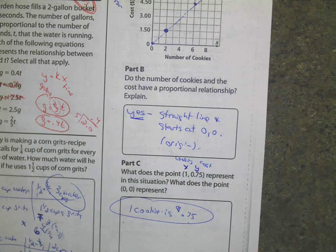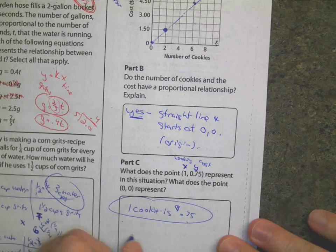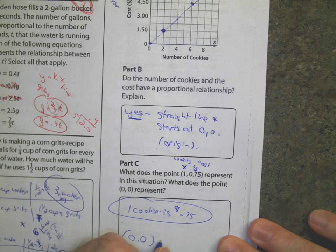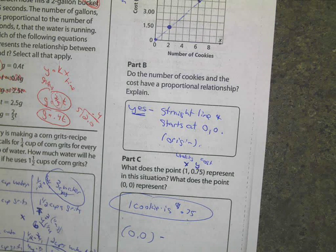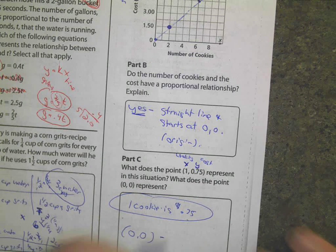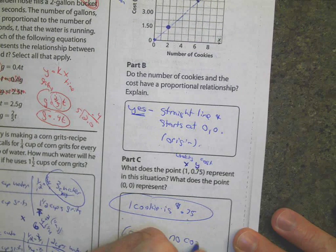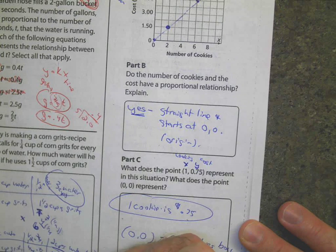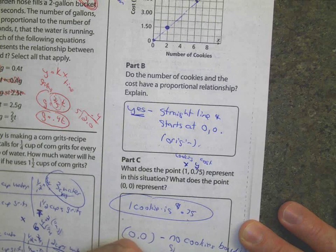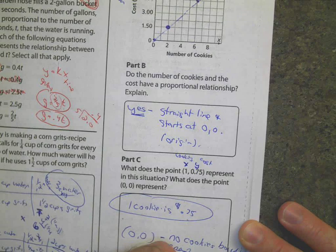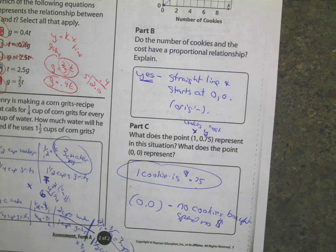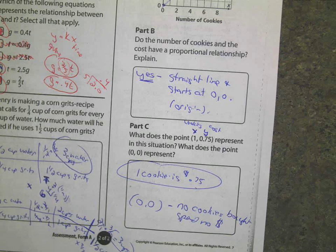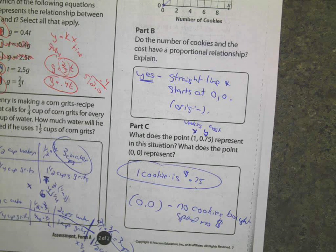Then, what does the point 0 comma 0 mean? What does 0 comma 0 mean? It means if I don't buy any cookies, I'm going to spend no money. No cookies means I spend absolutely positively no money. All right. Thank you.